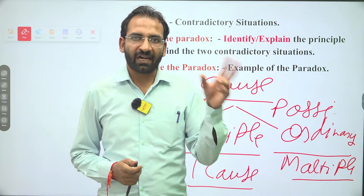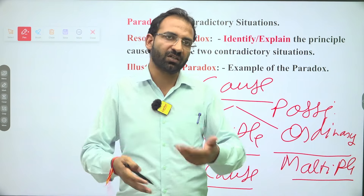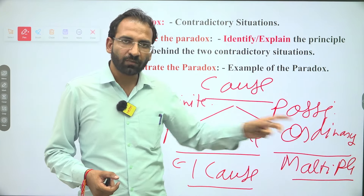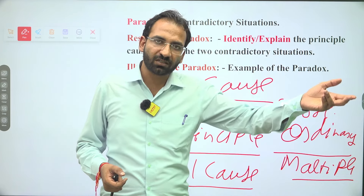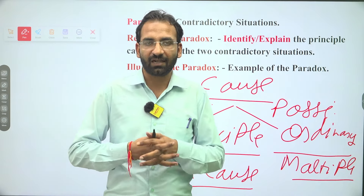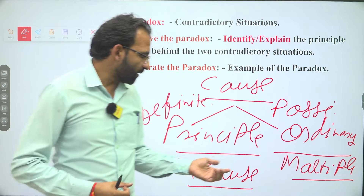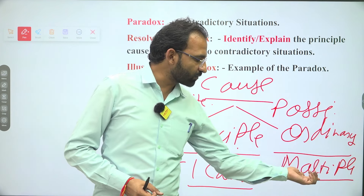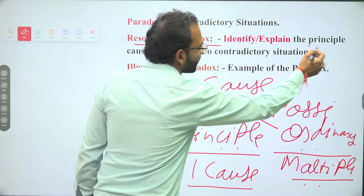If I say the batsman was very good, that is an ordinary cause — why? Because it is possible that the bowlers are very good and the fielders are very good too. But if I say all the players of the Indian cricket team played well, that is the principal cause — because it doesn't leave any other possibility open. When a cause leaves no other possibility, it is the principal cause; when possibilities remain, it is the ordinary cause.